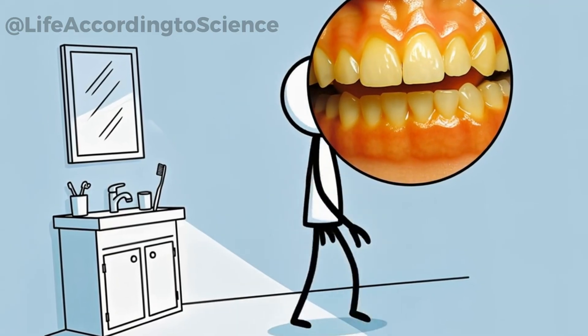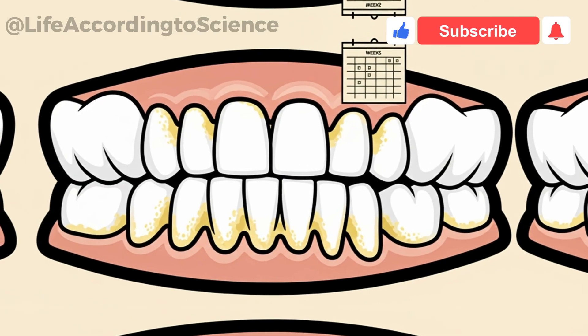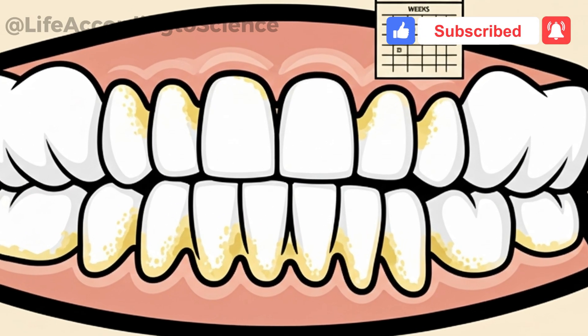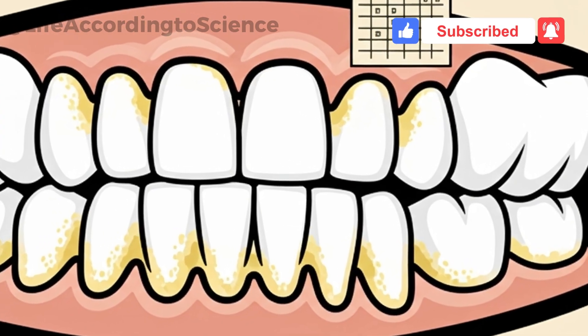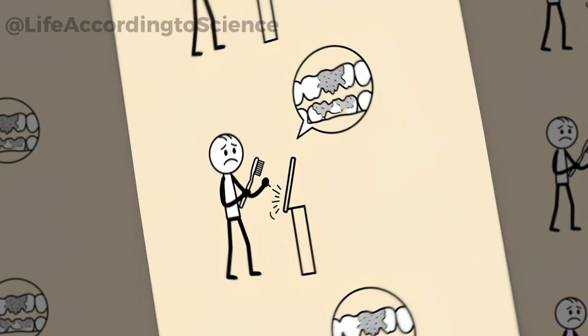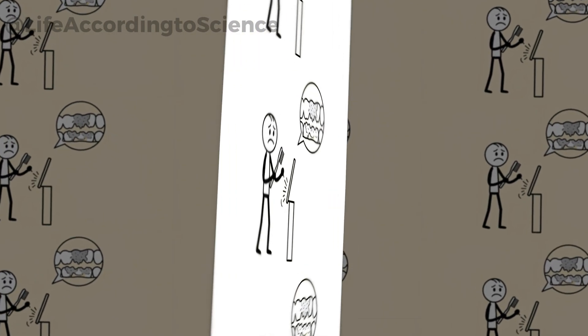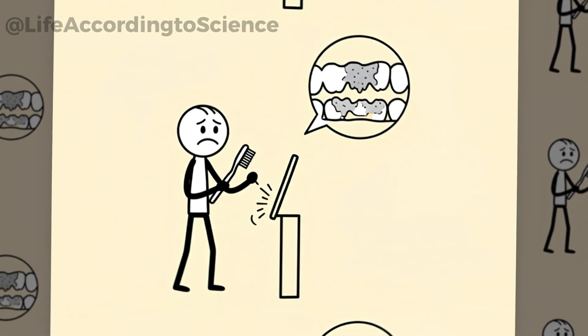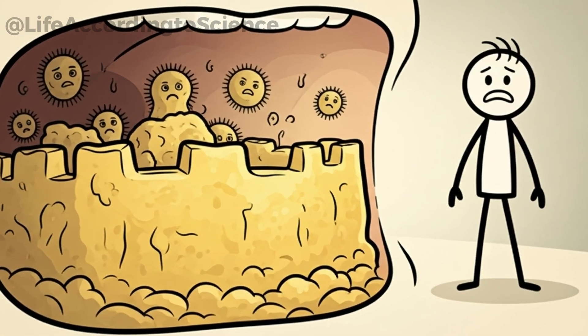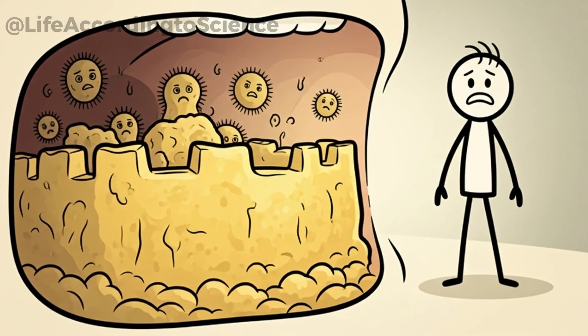Plaque that's left undisturbed doesn't stay soft for long. Within weeks, it begins to mineralize into tartar, a hard, calcified deposit that clings stubbornly to your teeth. Unlike plaque, you can't remove tartar with a toothbrush no matter how hard you scrub. Tartar creates a rough surface where bacteria thrive even more easily. It creates a protective fortress for harmful microbes, keeping them safe from saliva and even from occasional attempts at cleaning.